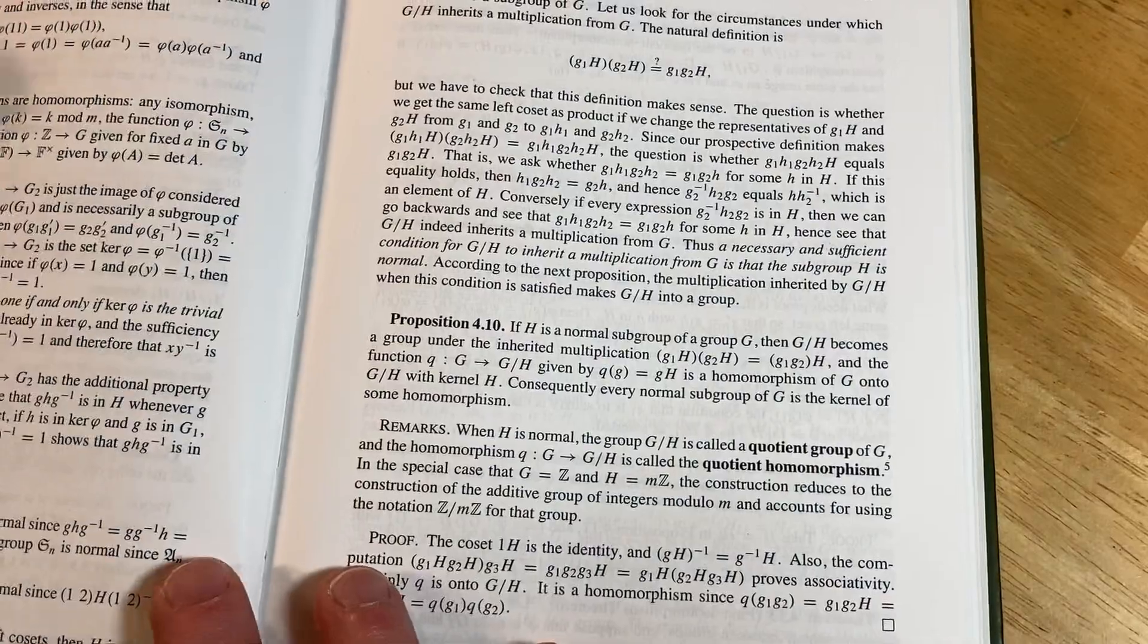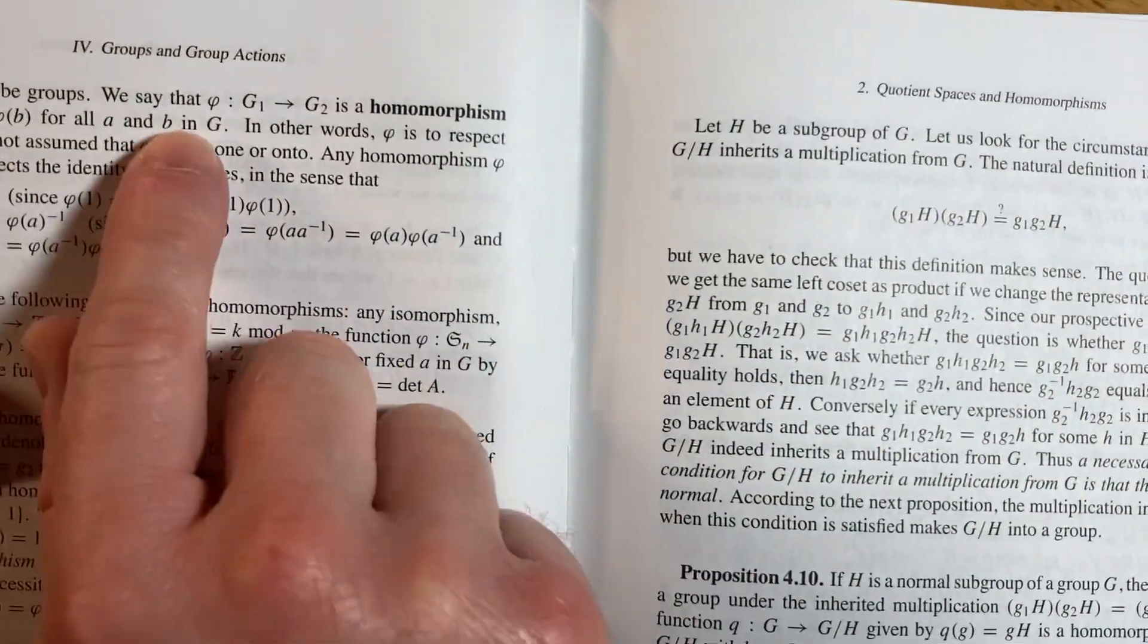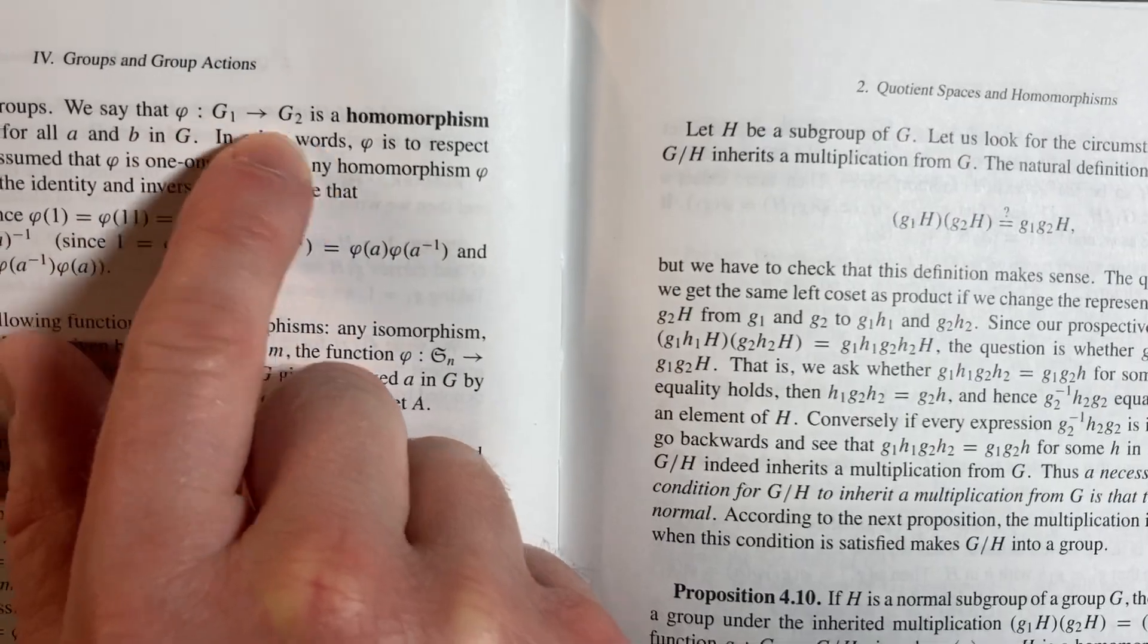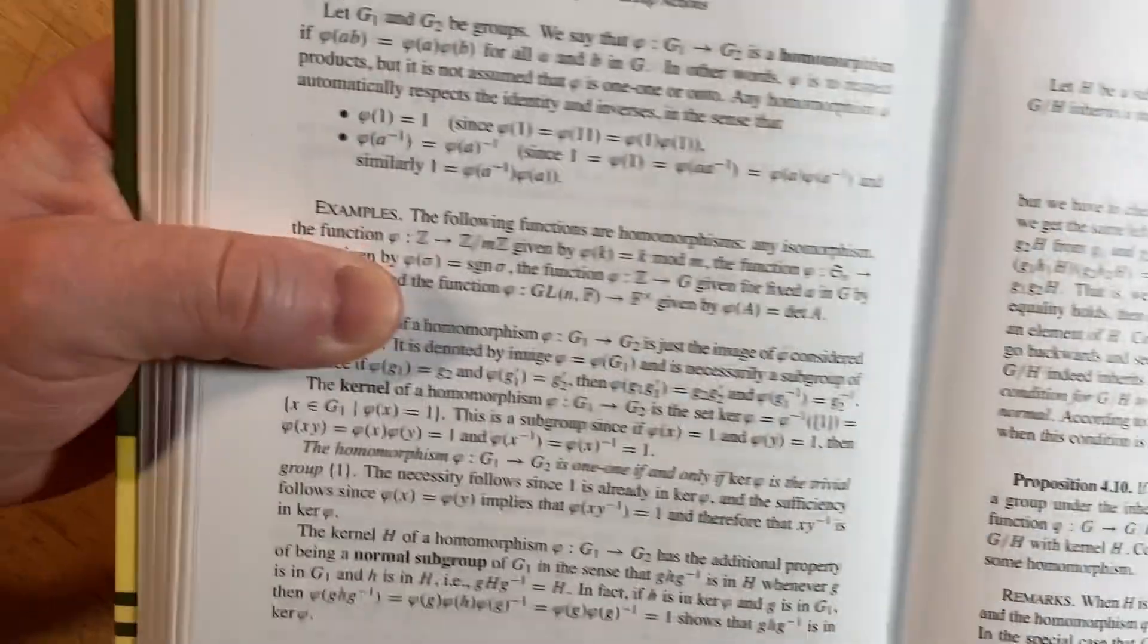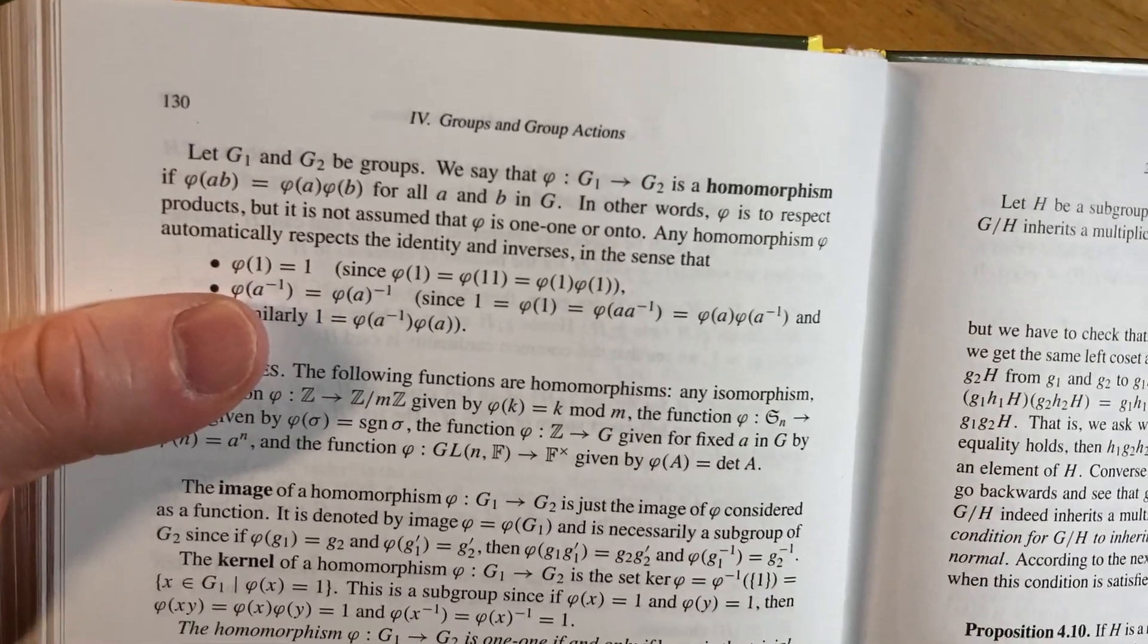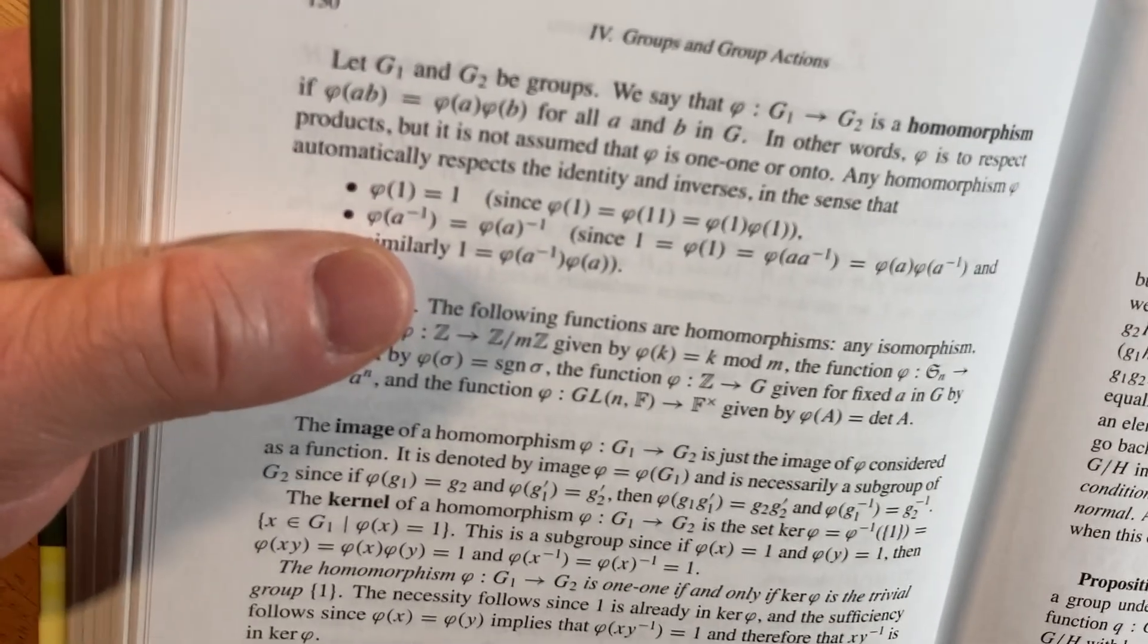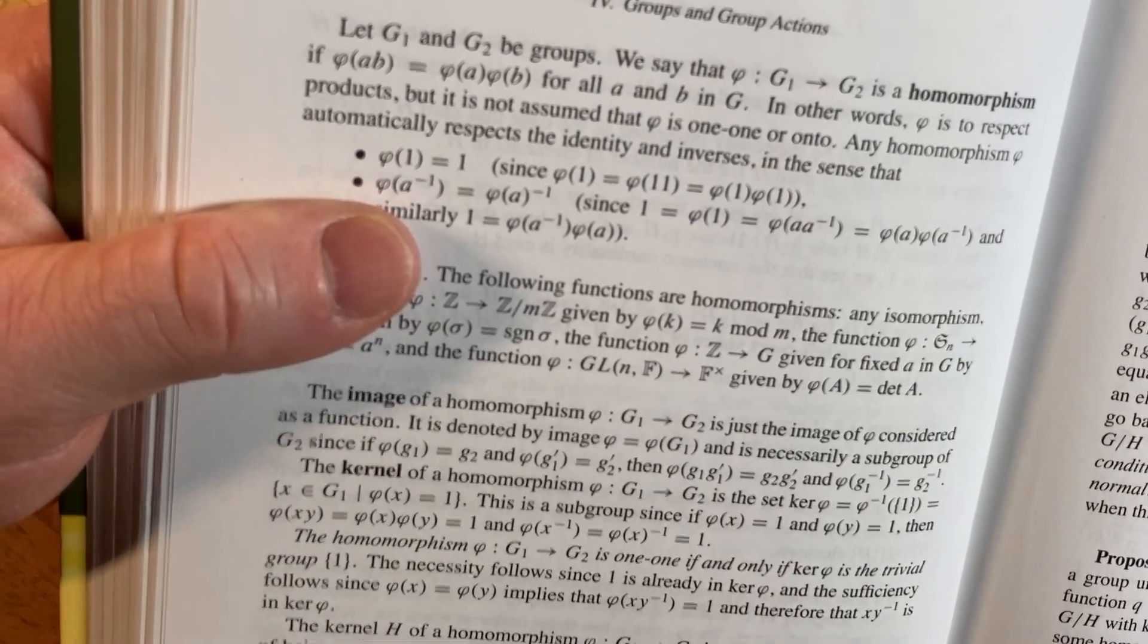But yeah, homomorphisms—that's important. We say phi from G₁ to G₂ (these are groups) is a homomorphism if phi(ab) is equal to phi(a) times phi(b) for all a, b in G. In other words, phi is to respect products, but it does not assume that phi is one-to-one or onto.